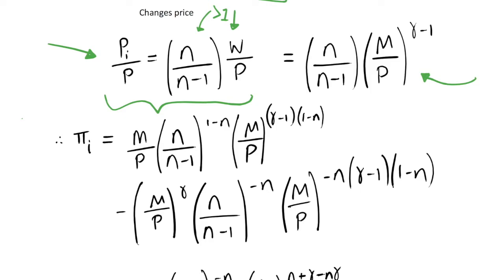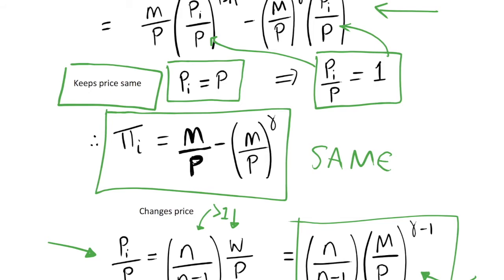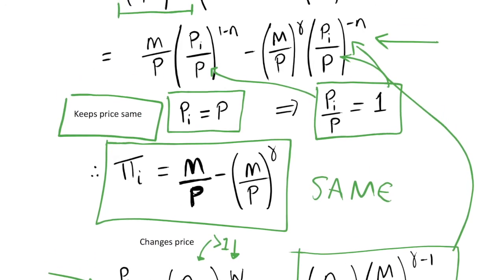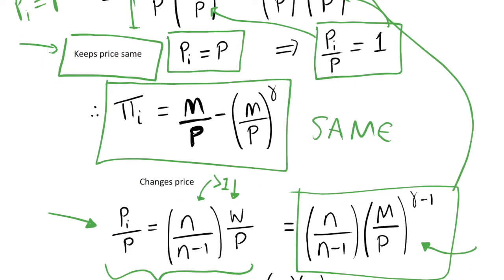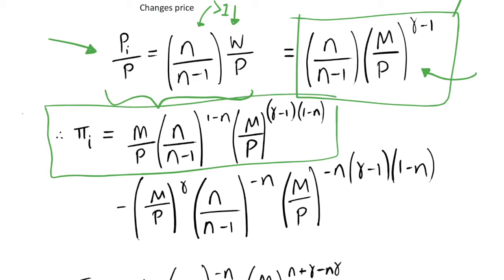Once we have this optimal price, we can derive the profit function in terms of money supply and price level. The pi over p term is substituted into the profit function — recall the profit function was m over p multiplied by pi over p to the power of 1 minus eta, minus the other term. When changing prices, we set the price to the optimal level and substitute that into the profit function, giving us the profit function when we change prices to the optimal level.